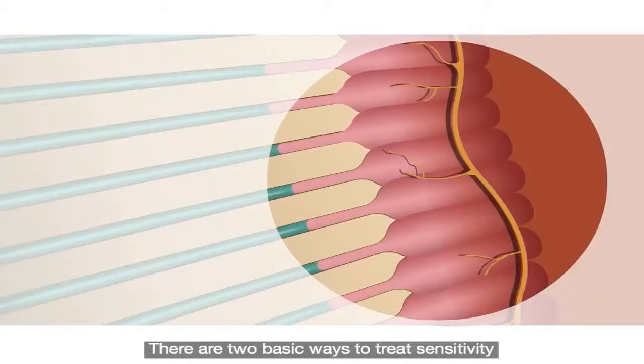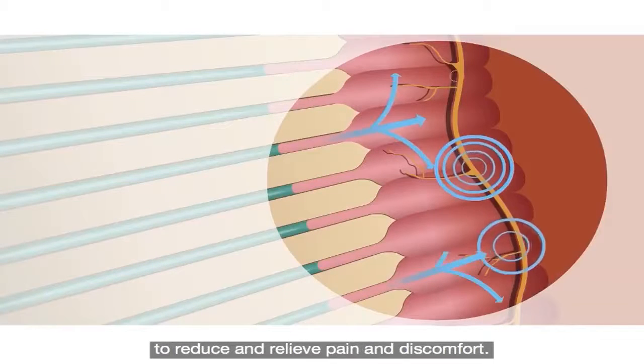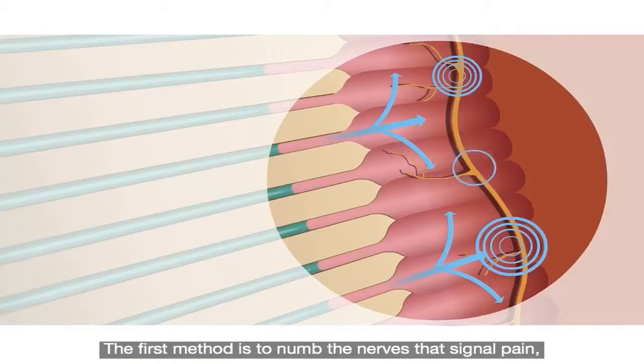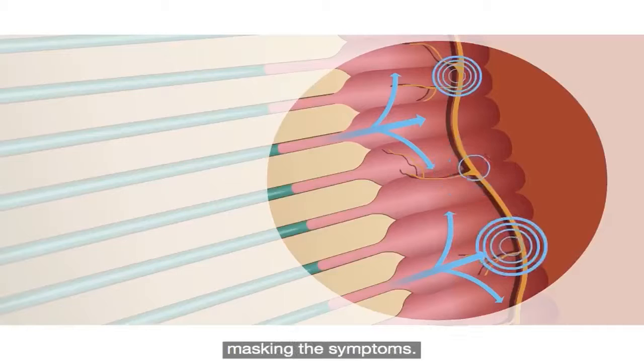There are two basic ways to treat sensitivity to reduce and relieve pain and discomfort. The first method is to numb the nerves that signal pain, masking the symptoms.